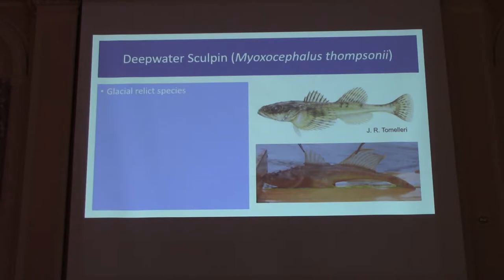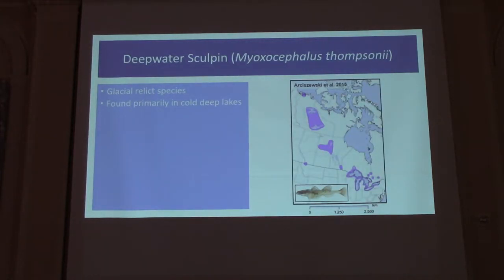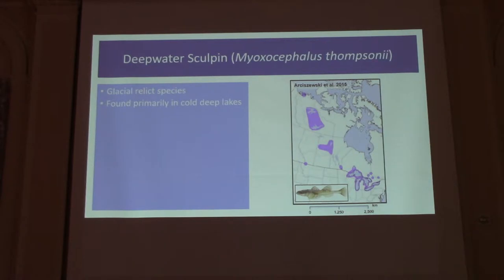This is a good example of what deepwater sculpin look like. They are considerably different from what we typically think of as sculpin — we have a different group, the slimy sculpin, mottled sculpin, that we find in streams. They're usually very easy to differentiate. Here is a great example of that retreat with the glacier. The glacial sheets came down over North America, and as they retreated, deepwater sculpin followed back up and then were trapped and left behind — they couldn't get off the bus.